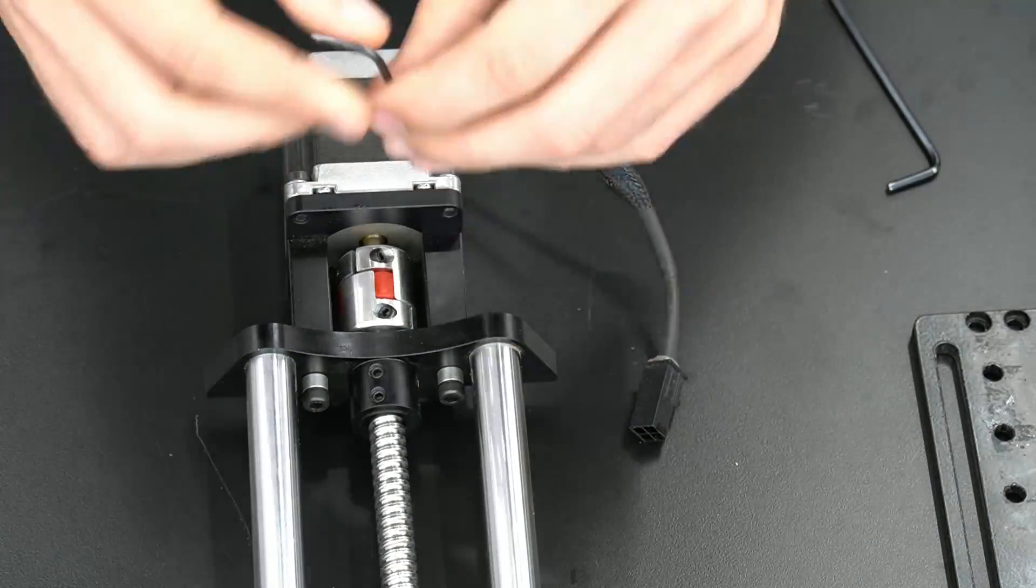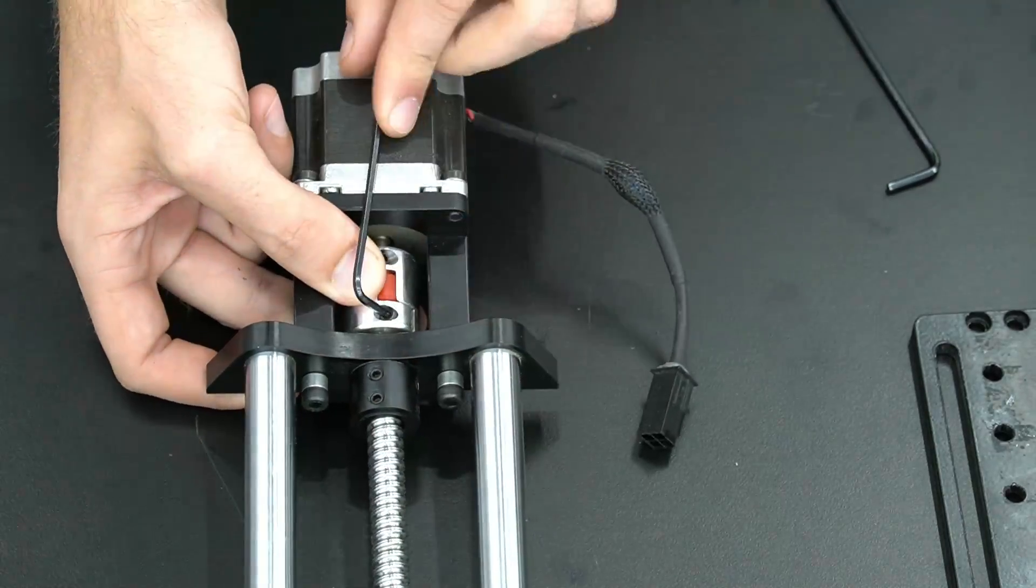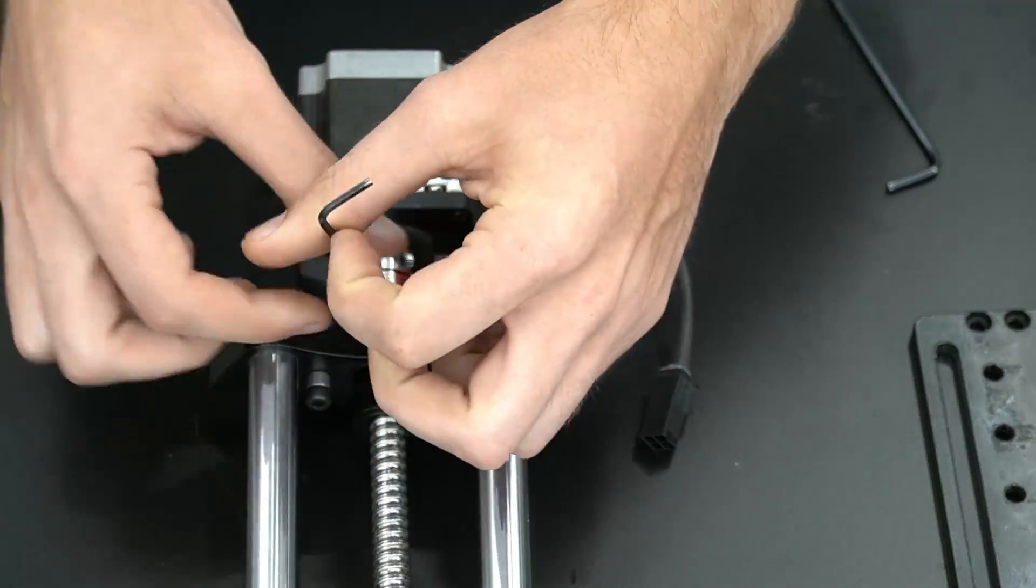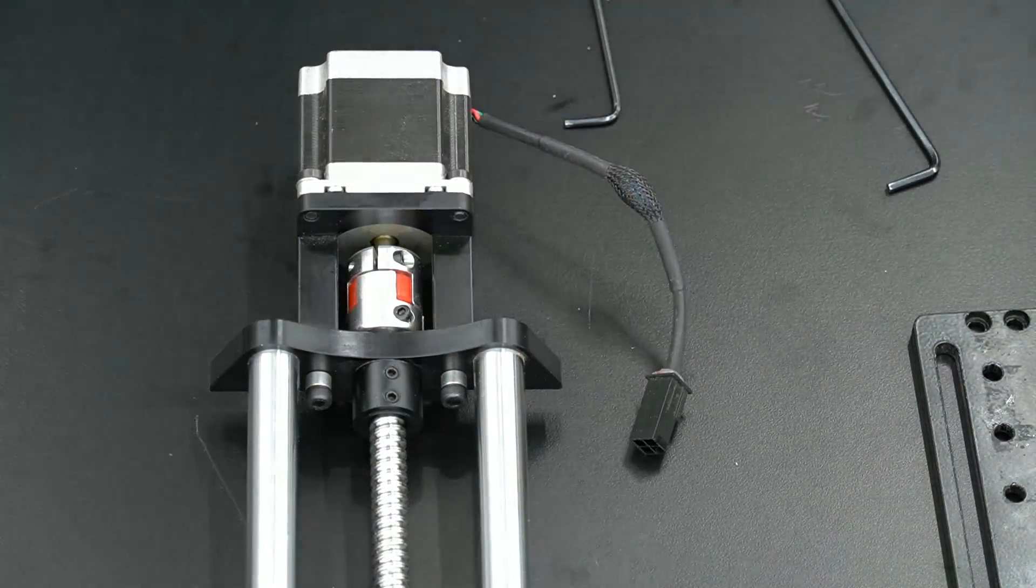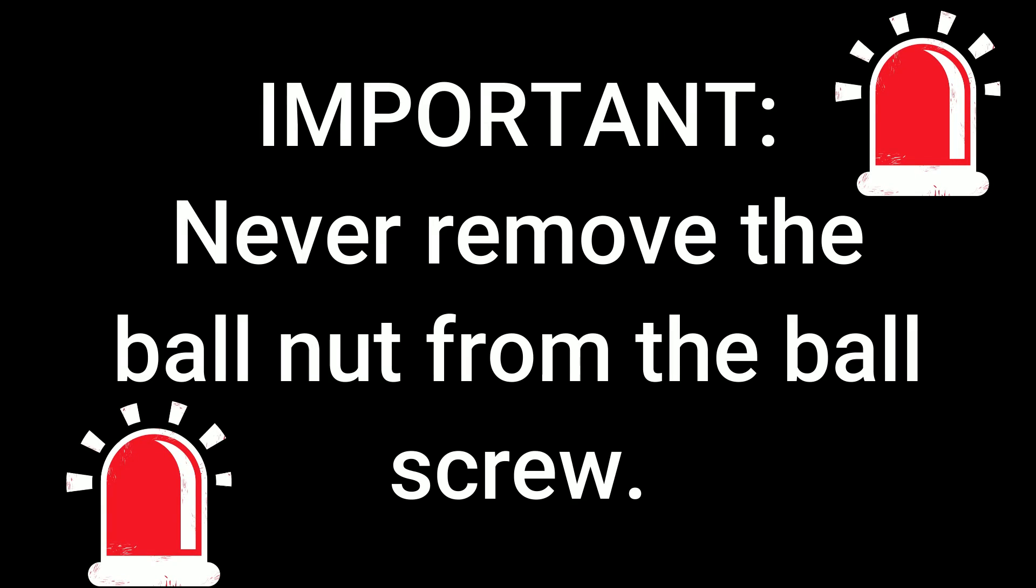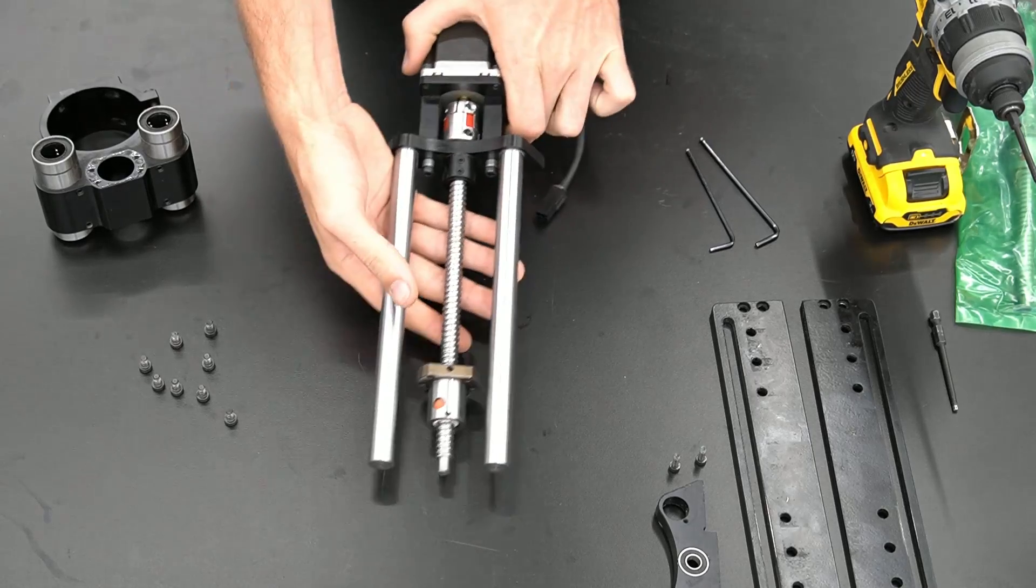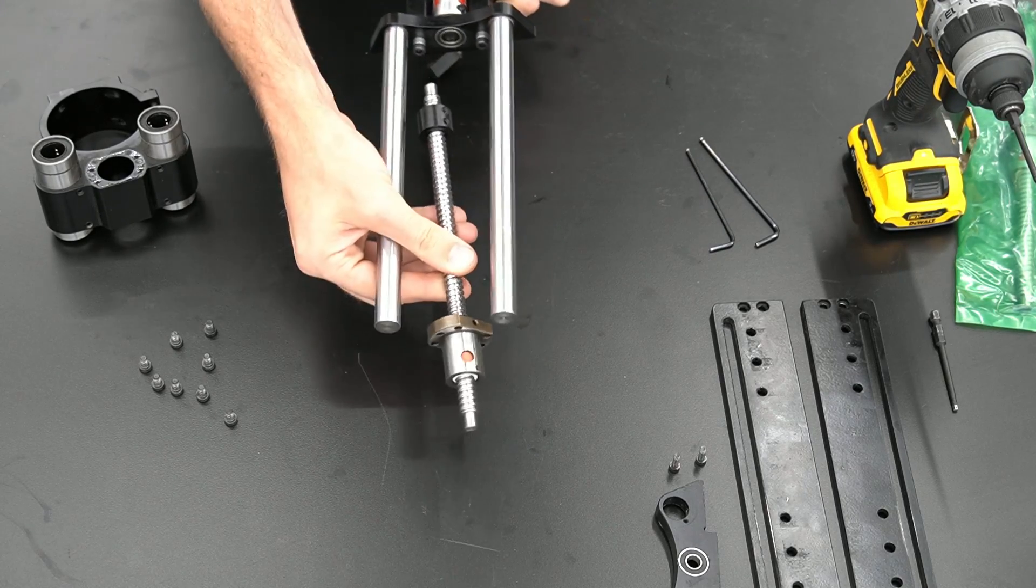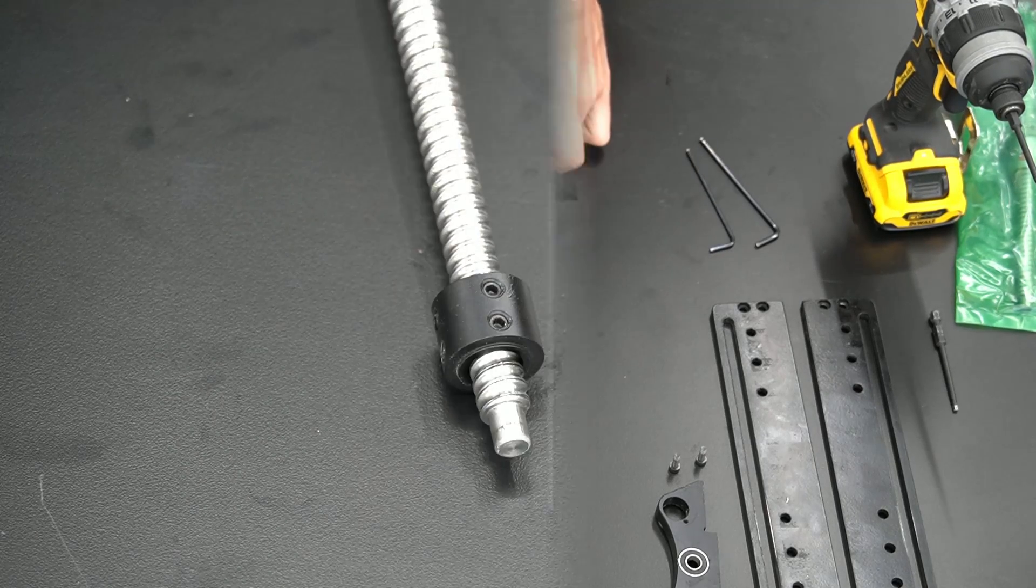Next, we're going to loosen the set screw on the ball screw side of the coupler. Once loosened, this will allow us to remove the ball screw along with the ball nut. Never remove the ball nut from the ball screw. With the set screw on the coupler loosened, we can remove the ball screw from the coupler.